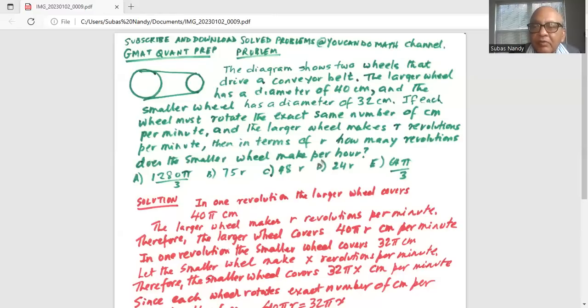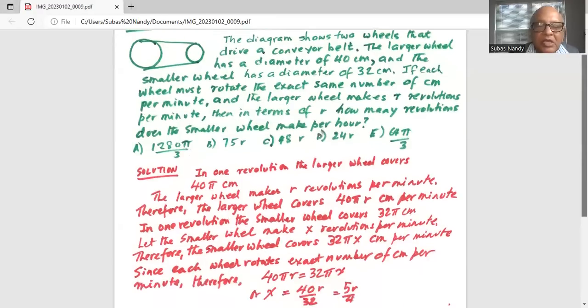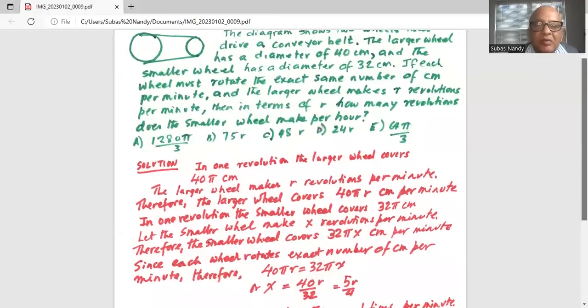Since from the given problem statement, each wheel rotates exact number of cm per minute, therefore 40 pi r is equal to 32 pi x.